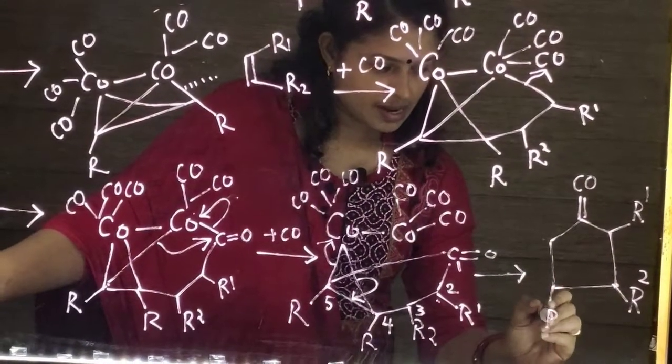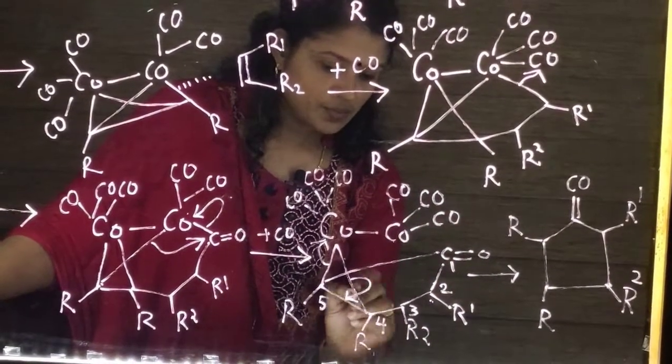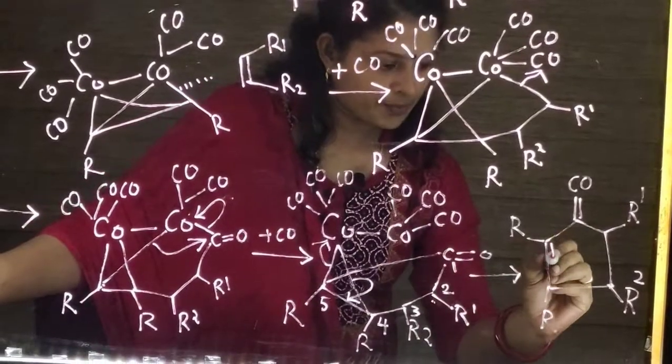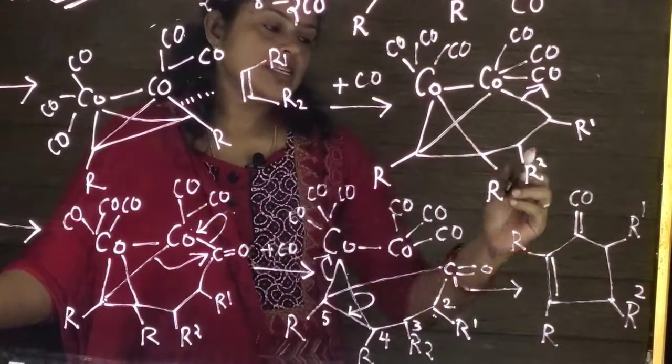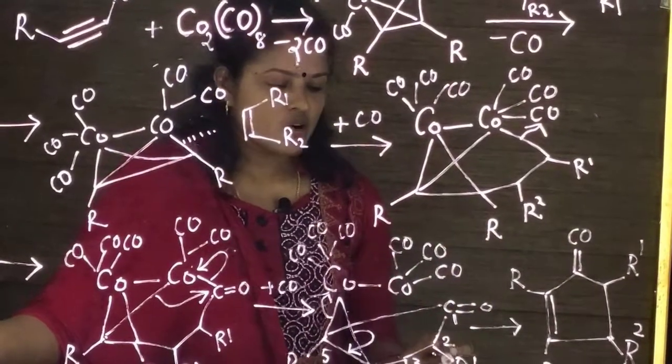fourth carbon and fifth carbon both are. And there is a double bond is formed between four and five. So cyclopentenone is the final product of this Pauson-Khand reaction.